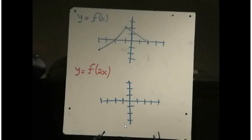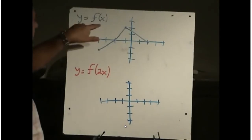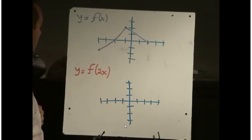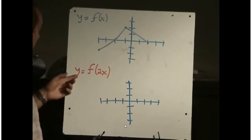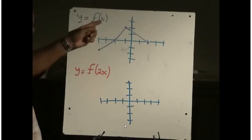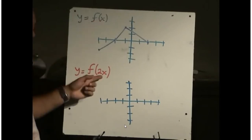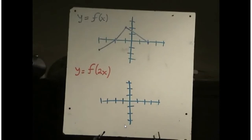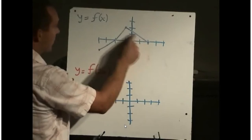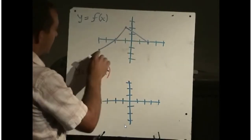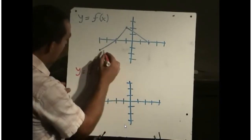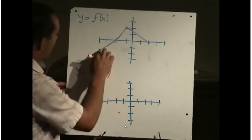Here's another example. I've graphed a function y equals f of x — you don't know its equation, but here's a sketch of the graph. If we're asked to graph y equals f of 2x, we realize that x has been replaced with 2x, giving a horizontal compression by a factor of one-half. All x values are one-half of what they used to be. I've got four key points. The x value of negative 4 moves to negative 2, keeping the same y value — that point moves from here to here.